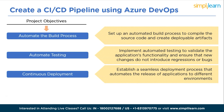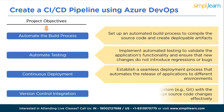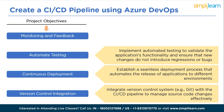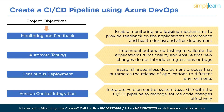The next is version control integration: integrate a version control system such as Git with the CI/CD pipeline to manage source code changes effectively. The next is monitoring and feedback: enable monitoring and logging mechanisms to provide feedback on the application's performance and health during and after deployment. In conclusion, creating a CI/CD pipeline using Azure DevOps is an excellent project to showcase your DevOps skills and expertise, equipping you to deliver software with speed, reliability, and efficiency.